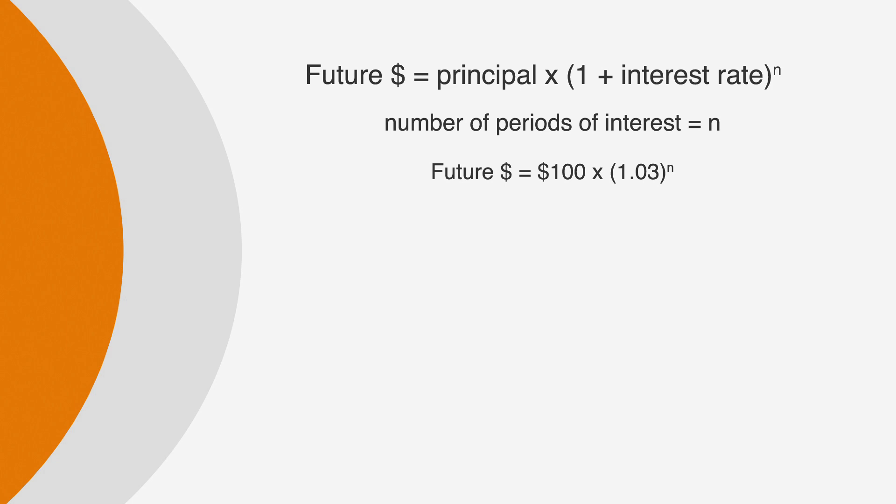Now let's say we want to know how much we would have after two years. Well, we would make n equal to 2. 1.03 squared is 1.0609. And 100 times 1.0609 is 106.09. So in two years, we would have $106.09, exactly what we determined previously.